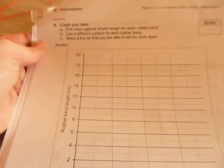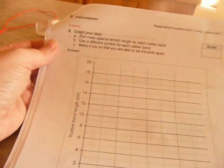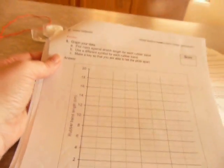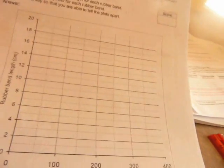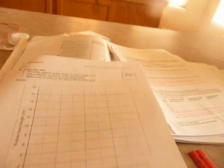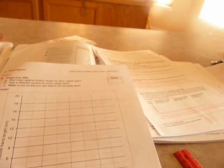So you could use, say, a solid dot for the thin rubber band. You could use a triangle for the medium rubber band, and you could use a square for the thick rubber band. Or you could use different colors, or you could use different colored lines. So your data table will have three different lines on it.